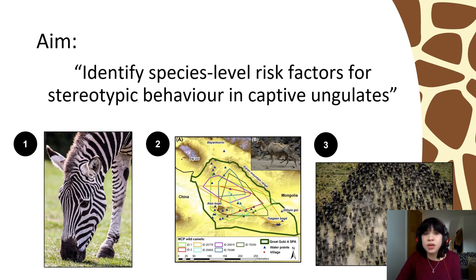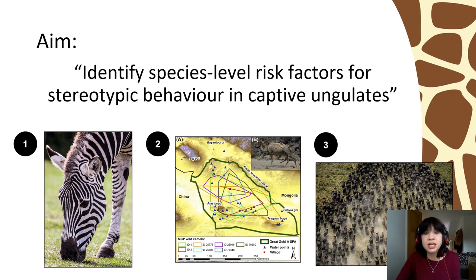Based on previous work, we hypothesised that risk factors would likely fall into three key categories: firstly, those relating to foraging — the eating and processing of feed; secondly, factors related to movement and range size; and lastly, factors relating to disparities between a species' natural social organisation and the social conditions they experience in captivity.